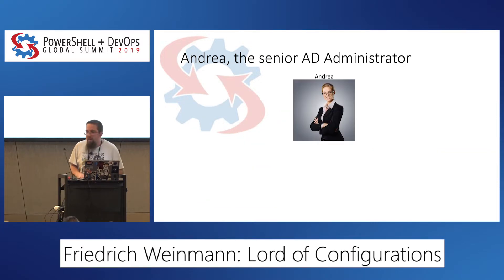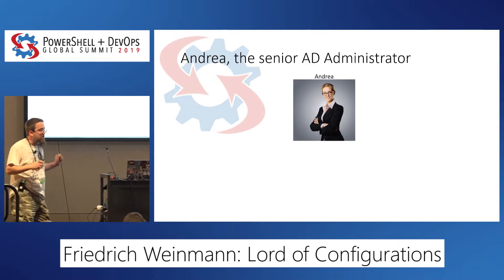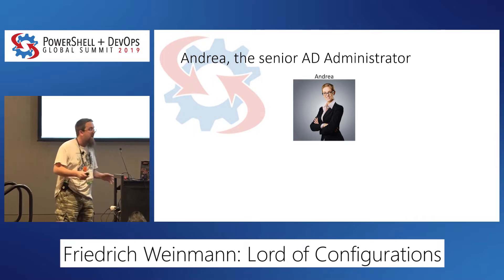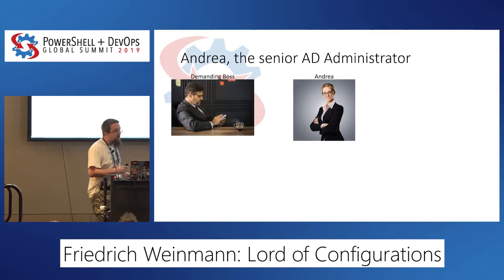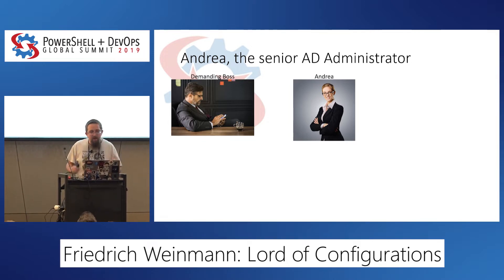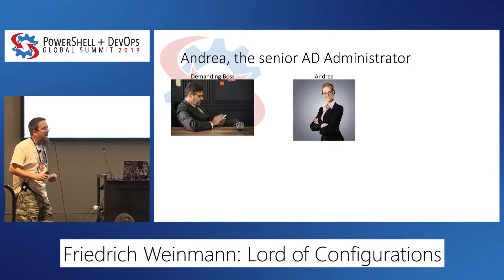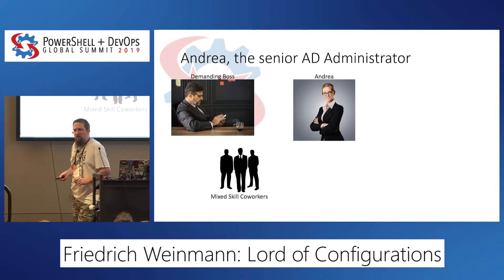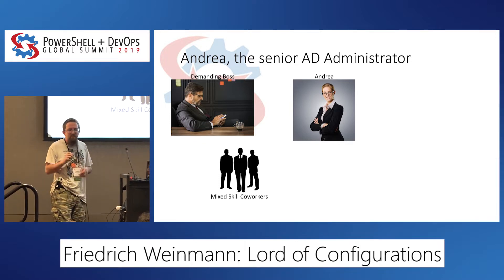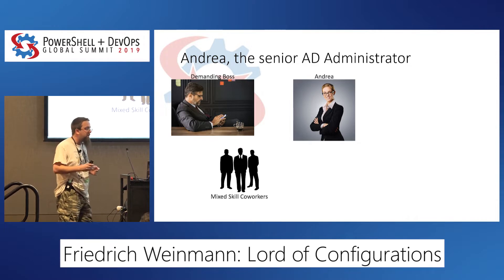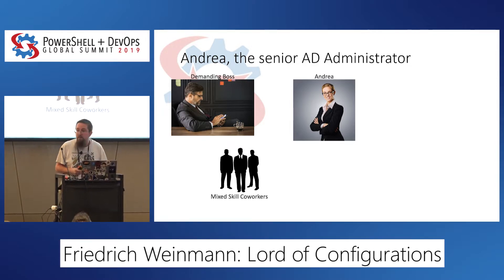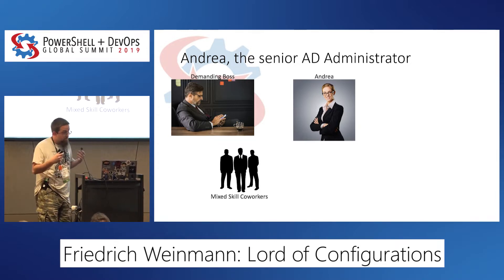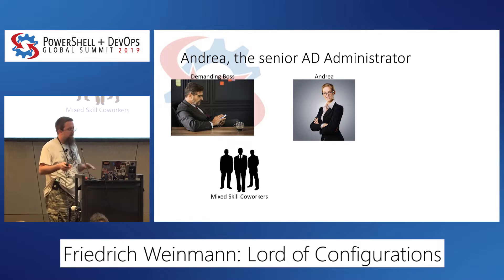Let's look at Andrea. Andrea is an Active Directory superhero — really awesome. Long years of PowerShell scripting, long years of Active Directory, well-versed in other things. She's the model of competency. She's got a boss who is demanding, active, and engaged — he doesn't micromanage. He tells her: I want results and I want you to measure them. Her co-workers are on average pretty skilled, but it's a weird skill mix. Most won't be PowerShell superheroes, but they'll handle the command line and be reasonably competent administrators.